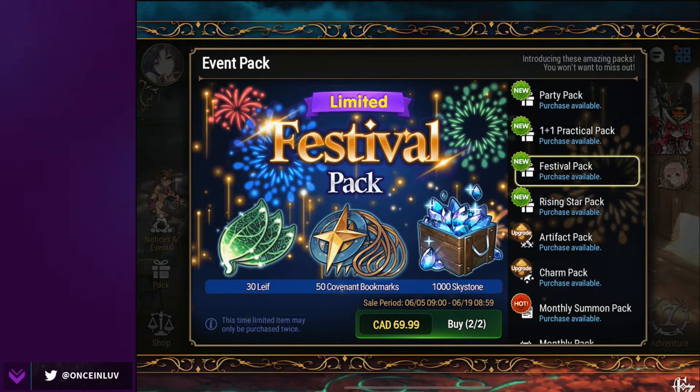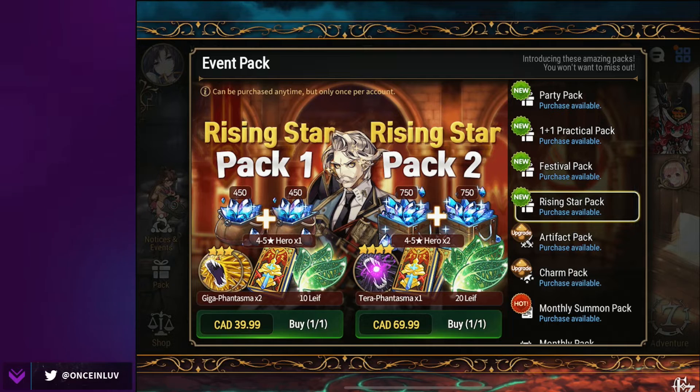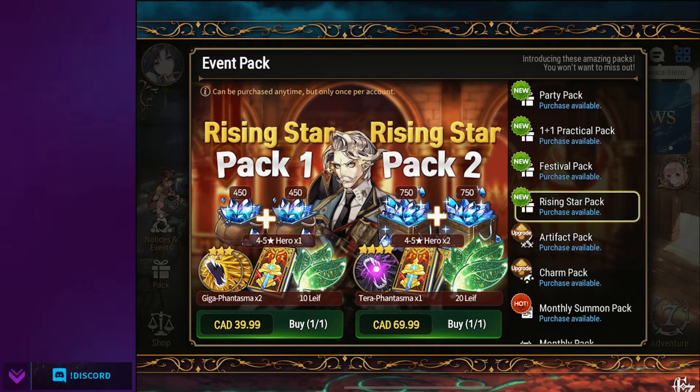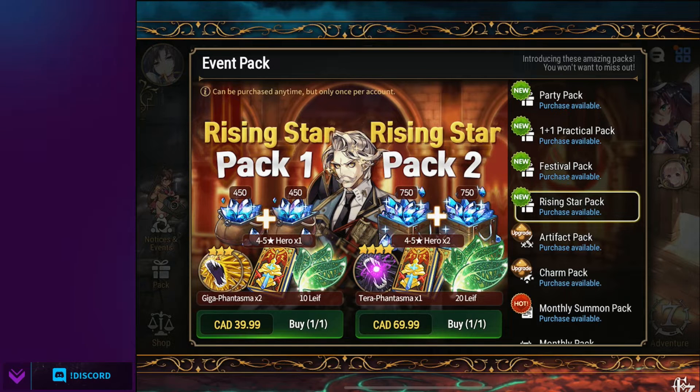The festival pack is 30 leafs, 50 bookmarks, and a thousand skystones for 50 which you can buy twice. And the rising star pack is 900 skystones, 10 leaves, two giga phantasmas, and a four to five star hero for 30. And 1500 skystones, one tera phantasma, two four to five star hero tickets, and 20 leaves for 50.